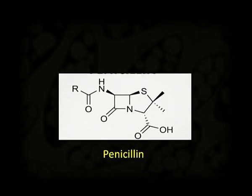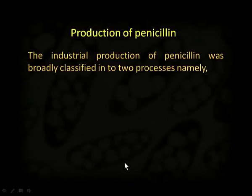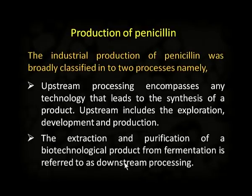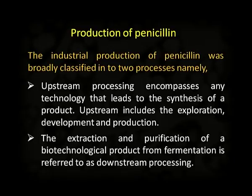Let us start with the production of penicillin. This is the chemical structure of penicillin antibiotic. The production of penicillin takes place by two processes: upstream processing and downstream processing. Upstream processing encompasses any technology that leads to the synthesis of a product, including exploration, development, and production. While the extraction and purification of a biotechnological product from fermentation is referred to as downstream processing.